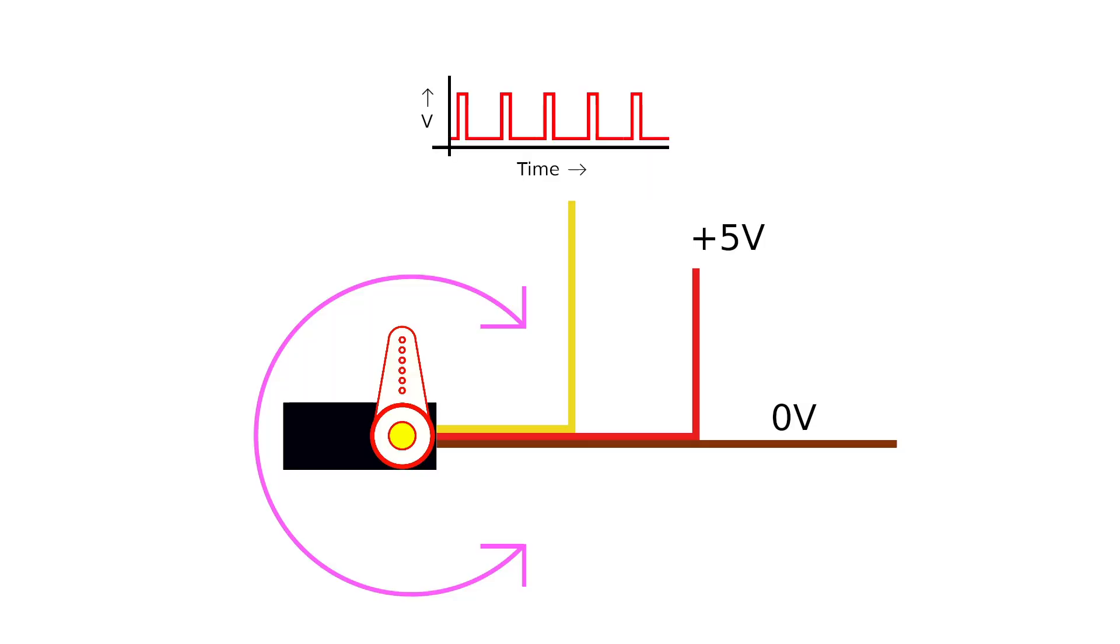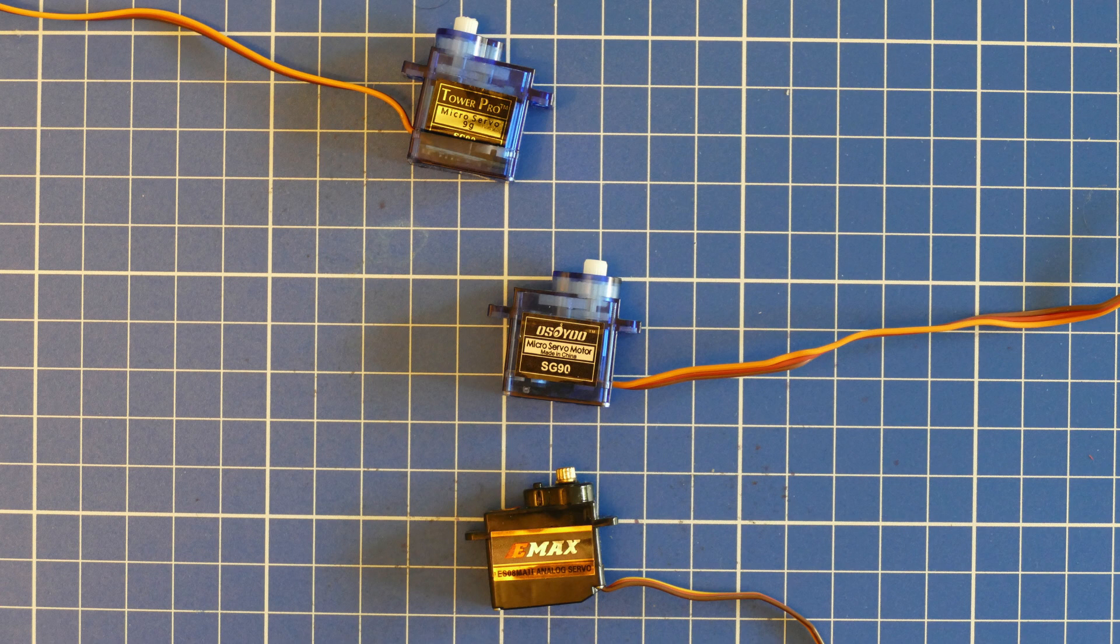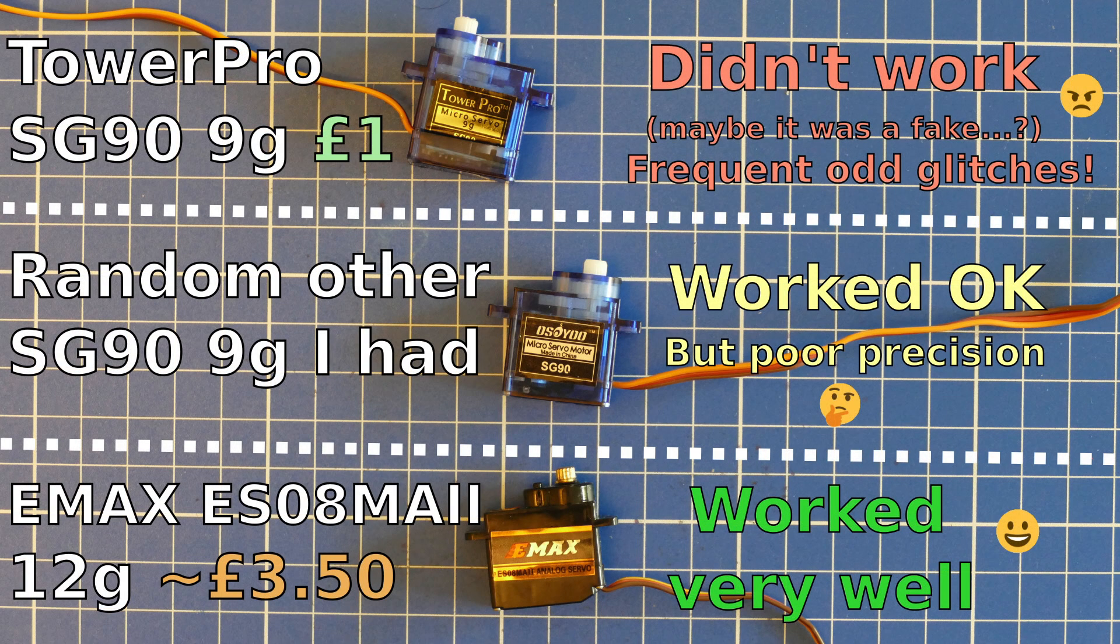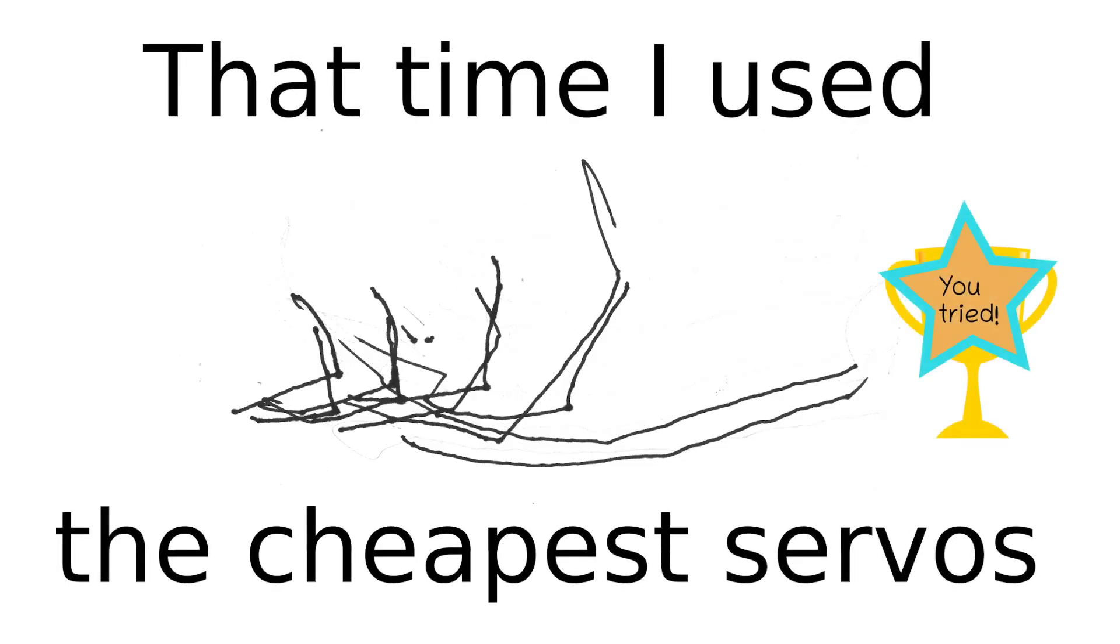We have three wires going into a servo, two of which provide power to it and one which sends a signal. One final note about these servos. You can get them for less than a pound each, but your results will be much better if you spend just a little bit more. If the brachiograph twitches or jitters, you may need better servos.